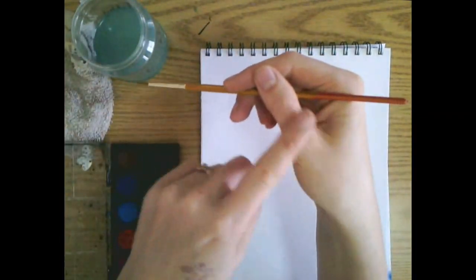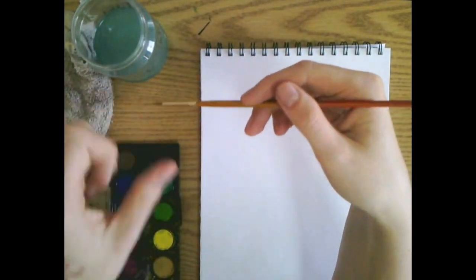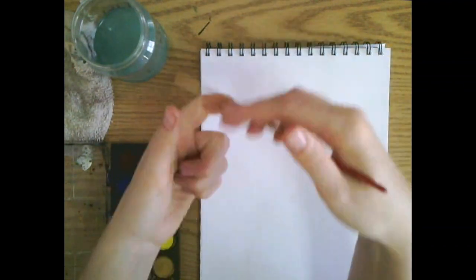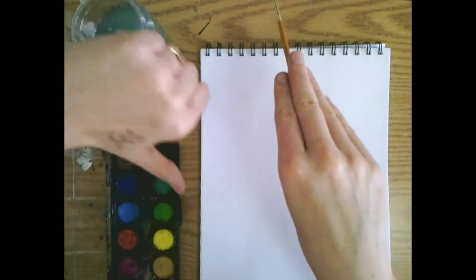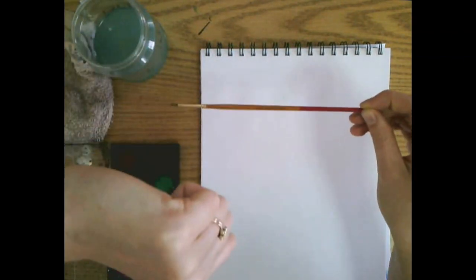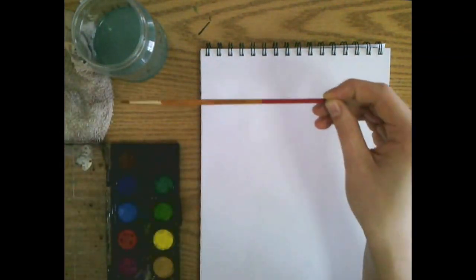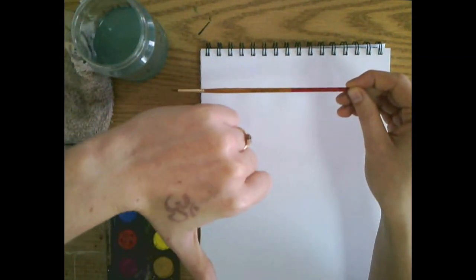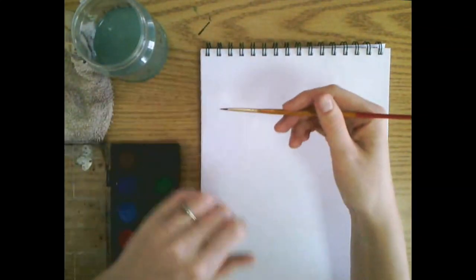First let's talk about how we hold our paintbrush. We want to hold it just like a pencil so we have the most control. We don't want to hold it right at the top or any other funky grip that makes it hard for us to control, so putting it between our thumb and our other fingers.